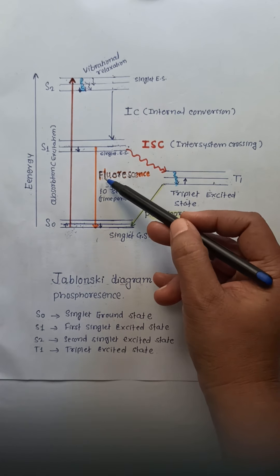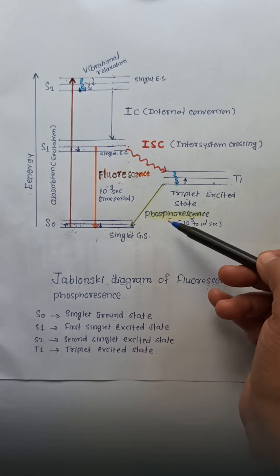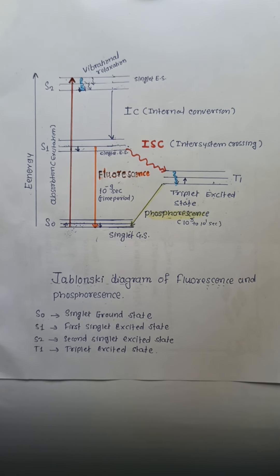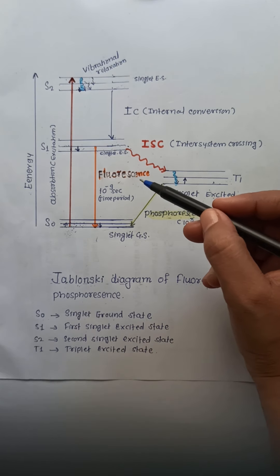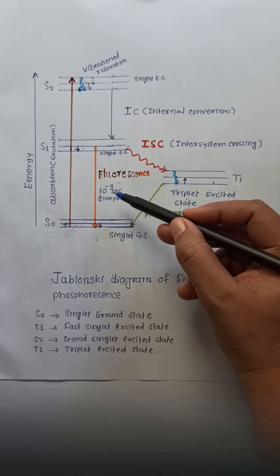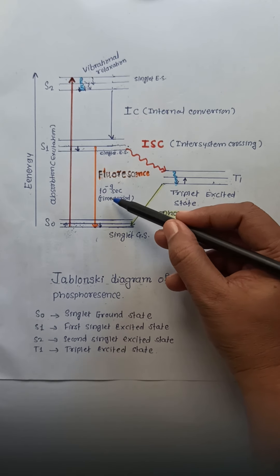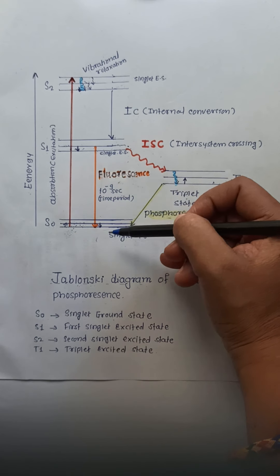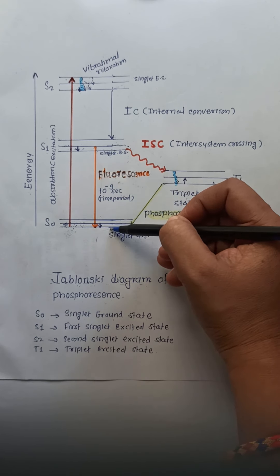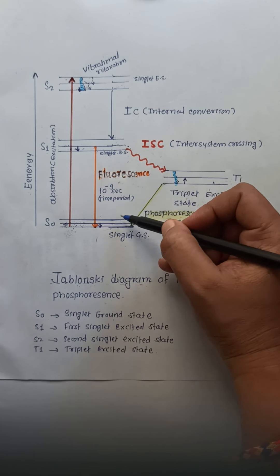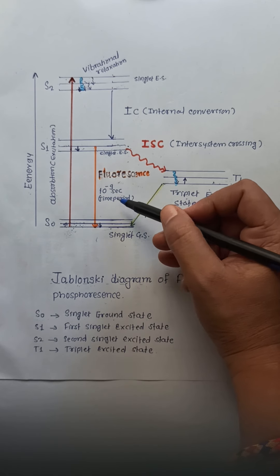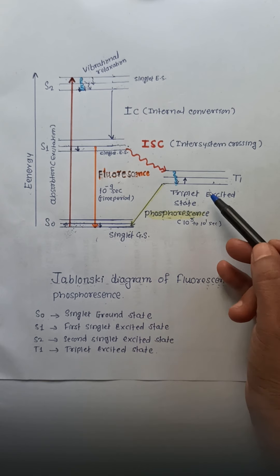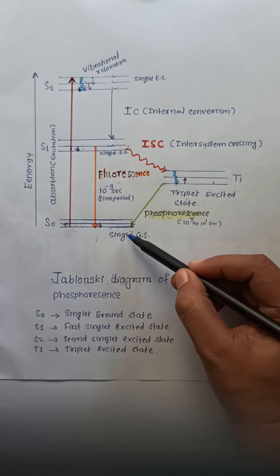The radiative processes include fluorescence and phosphorescence. Fluorescence is the phenomenon of the emission of radiation when there is a transition from the singlet excited state to the singlet ground state, and the time period required is 10⁻⁹ seconds.